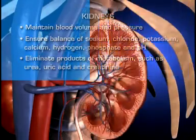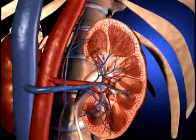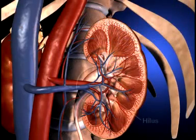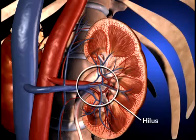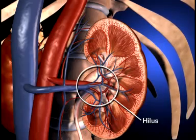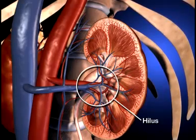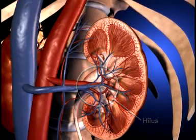The medial border of the kidney is indented by a deep fissure called the hilus, where the blood vessels, nerves, and ureters connect to the kidney.